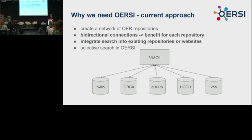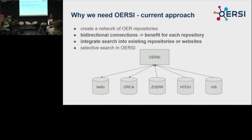Our current approach is to create a network of open educational resources repositories. It's not just a hierarchical structure where we harvest all repositories; the idea is to bring the search capability back to the repositories themselves, so they can include the overall search index by querying an API from the search index. We have tried this with Twillow and ORCA for North Rhine-Westphalia — they call all search queries directly on the ERSI and bring back results into their own repository front end. This creates bidirectional connections between repositories and the search index.